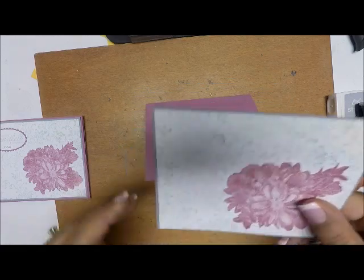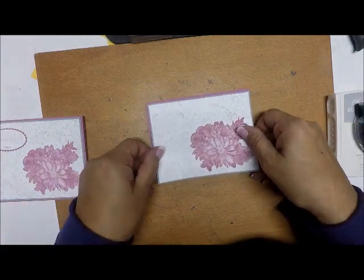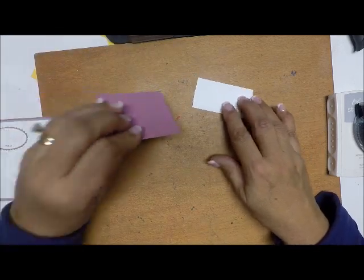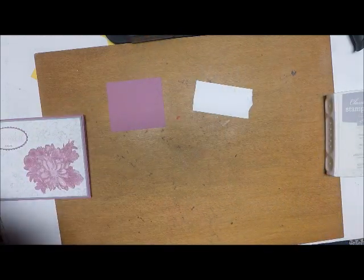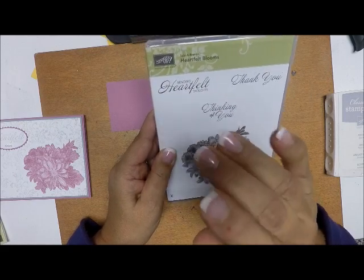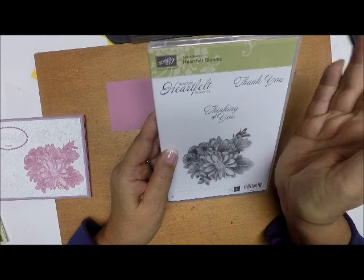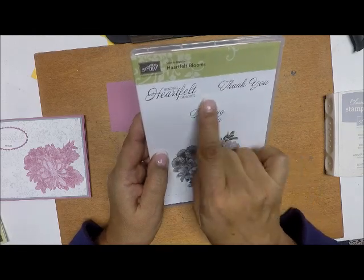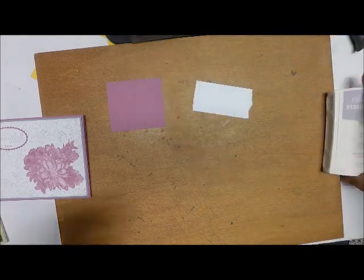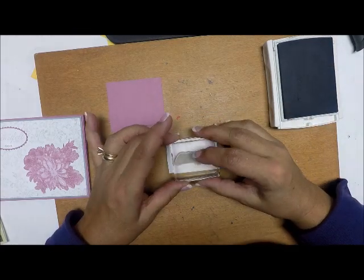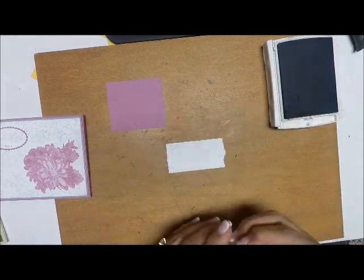Now, although this looks pretty on its own, we're going to make it look even prettier. Okay, so I have a little piece, scrap piece of Whisper White, and a scrap piece of smoky slate. I'm going to take the sentiment that comes with the heartfelt blooms. We're going to use this one here, sending heartfelt thoughts, which would be great for a thinking of you card, a sympathy card, just to cheer someone up. That's a great sentiment, and you can use it a lot. Then there's a thinking of you and a thank you. We're going to use that one. So I'm going to ink that up in smoky slate, and I'm just going to stamp that in the middle of this white piece of cardstock.